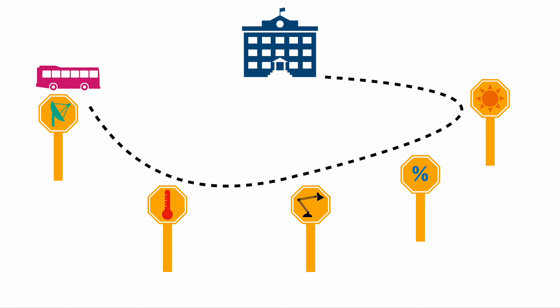Since there are no individual lines to each device anymore, we need a way to find and address the individual device. This works very similar to a public transport system — normally the stop has a name, or in other words, an address. This address could look like something like 0x23, 0x53, or similar.